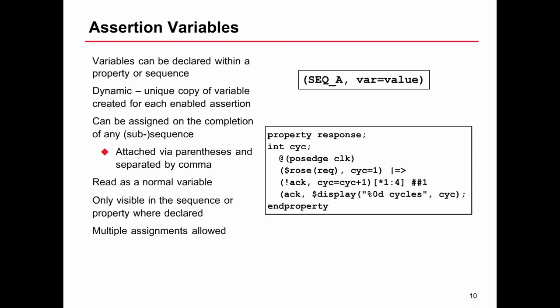What we're saying is if we've seen a rose request, then once we match that subsequence we're assigning to the local variable cyc the value one. This implies that we have not act occurring between one and four times, and every time we match not act we're incrementing the value of that assertion variable. On the cycle after that, we're requiring act to occur, and when it does we're attaching statements. These comma-separated statements don't necessarily have to be related to the assertion variables, they can do anything you like, and one useful thing is a dollar display.